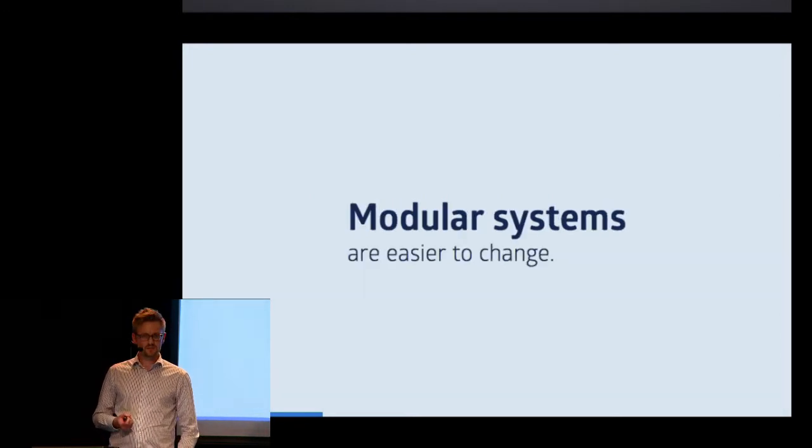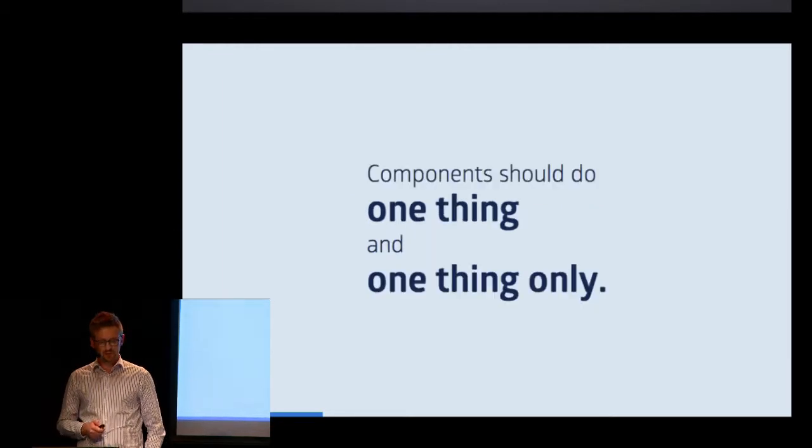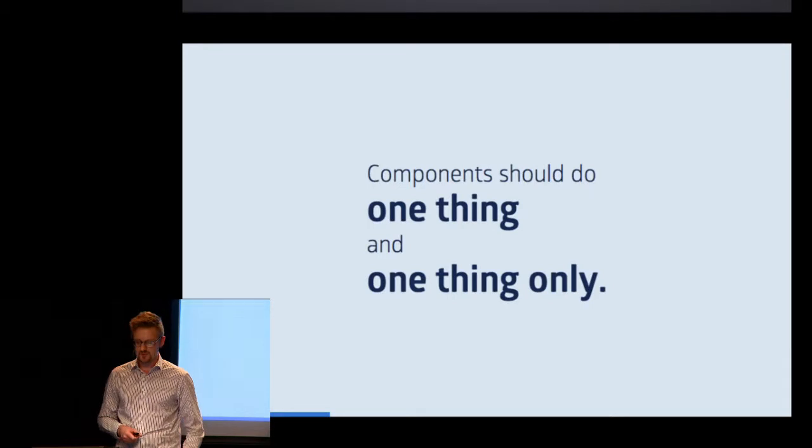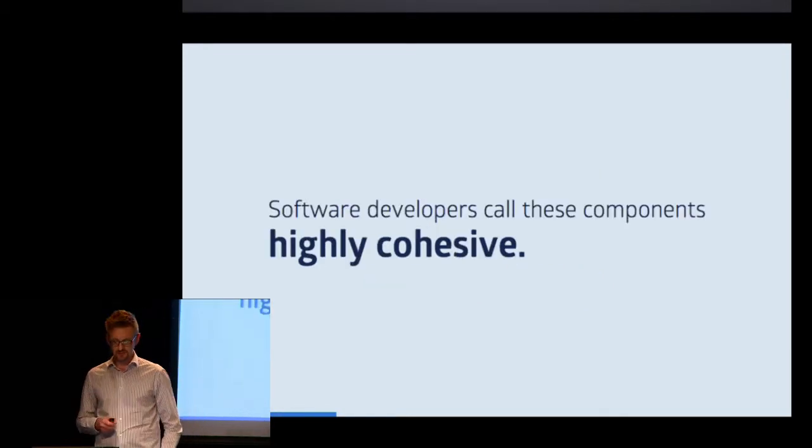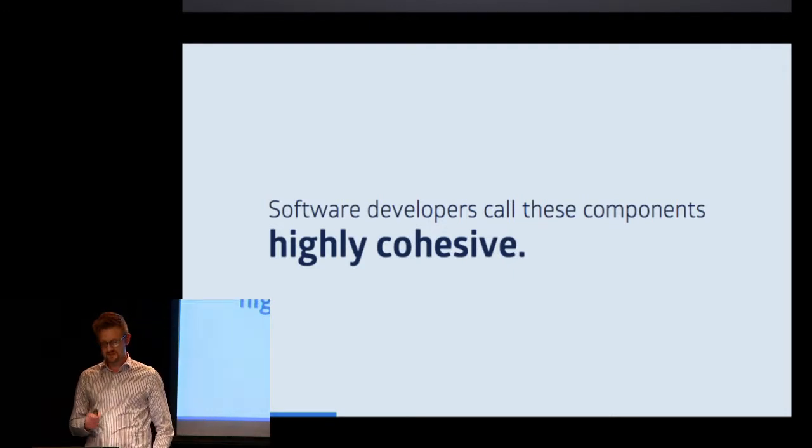But let's look at these two things from a more technical perspective. Systems that are easy to change are modular systems. But what makes a modular system? Well, a modular system consists of components that do one thing and one thing only. And as software developers, we have a special term for this. We like to call this software highly cohesive. And when I started taking software design classes, everybody told me that highly cohesive systems with low coupling, that's the thing to go for.